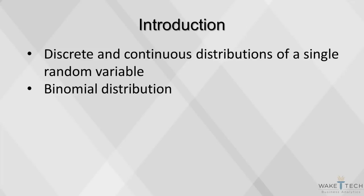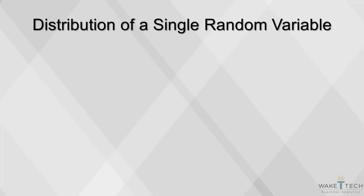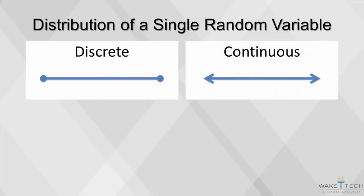This video will cover binomial distributions, which are a type of discrete distribution. We will first compare discrete and continuous distributions of a single random variable, and then we'll look at the binomial distribution specifically. There are two types of random variables: discrete and continuous.